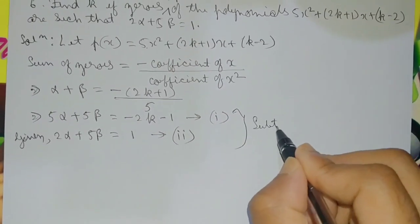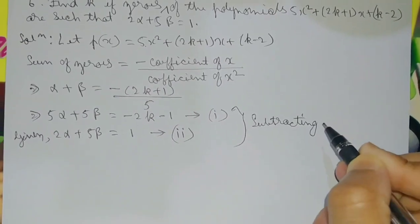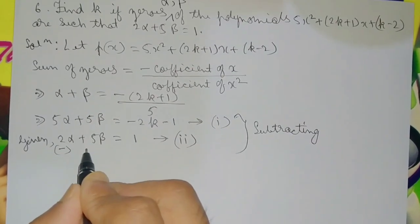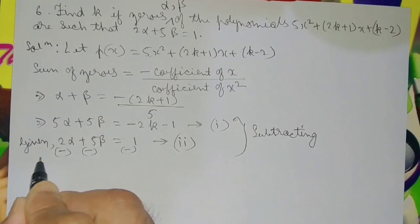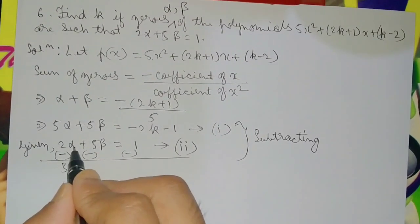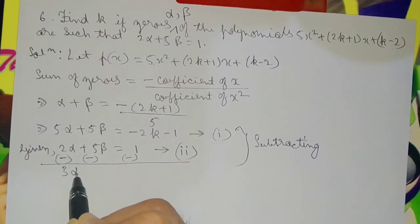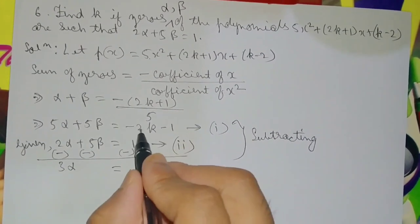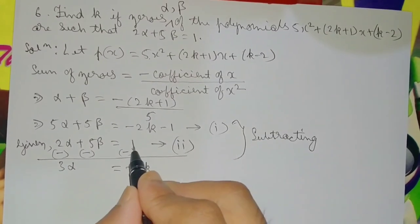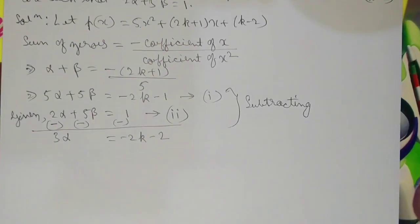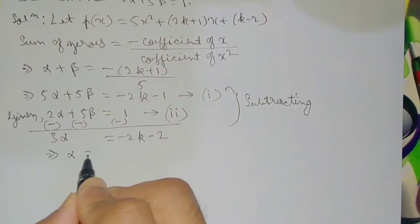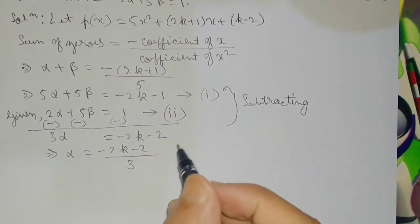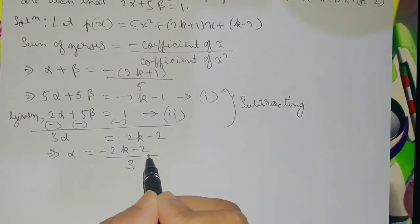Subtracting equation 2 from equation 1: 5 alpha minus 2 alpha gives 3 alpha; 5 beta minus 5 beta gives 0. So 3 alpha equals minus 2k minus 1 minus 1, which gives minus 2k minus 2. Therefore alpha equals (minus 2k minus 2) divided by 3.